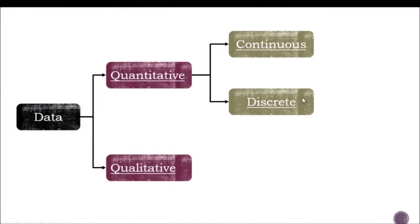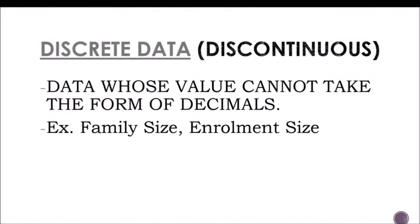Then we go to discrete data. Discrete data cannot be represented as decimals — they are represented as whole numbers. For example, family size: if the size of your family is six persons, you could not say six and a half persons or 6.5 persons. Similarly, enrollment size — you could not say that in a class there are 45.5 students. It is always a whole number, and that is considered discrete data, or discontinuous data.